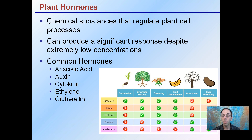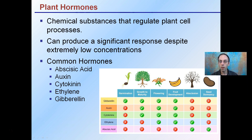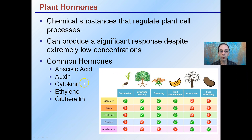Plant hormones are chemical substances that regulate plant cell processes. They can produce a significant response despite extremely low concentrations. Some key ones to be familiar with are abscisic acid, auxin, cytokinins, ethylene, and gibberellins. We'll go into these in detail in other lectures, but this gives you an idea and familiarizes you with some of these common plant hormones.